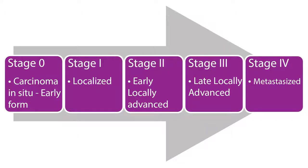For many cancers, the T and M combinations are grouped into five less detailed stages. Stage 0, also called carcinoma in situ, means abnormal cells are present but have not spread to nearby tissue. Stages 1, 2, and 3 indicate cancer is present — the higher the number, the larger the tumor and the more it has spread into nearby tissues. Stage 4 means the cancer has spread to distant parts of the body.